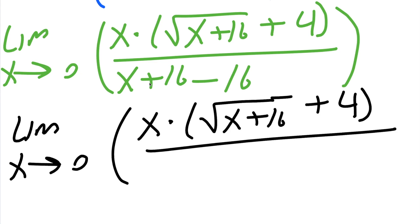Now here we have 16 minus 16, so it gets canceled, and our denominator is just x, closed parentheses.